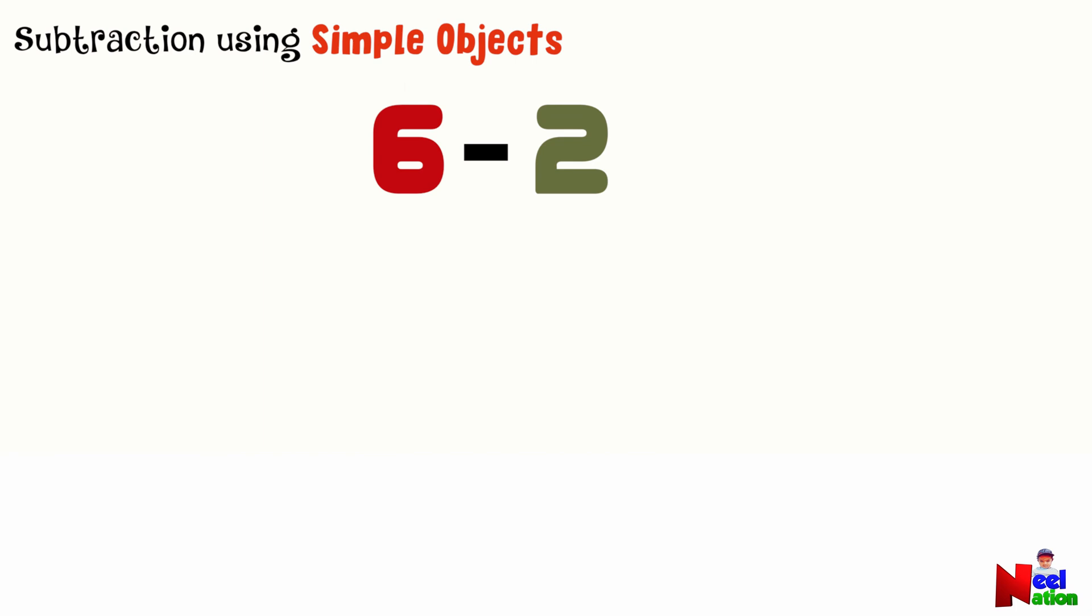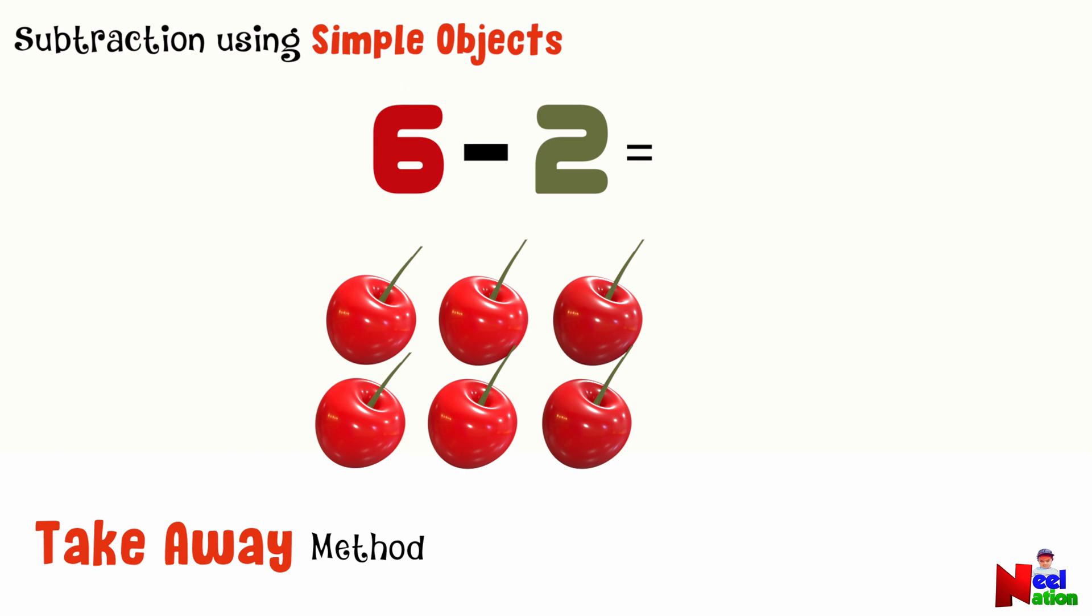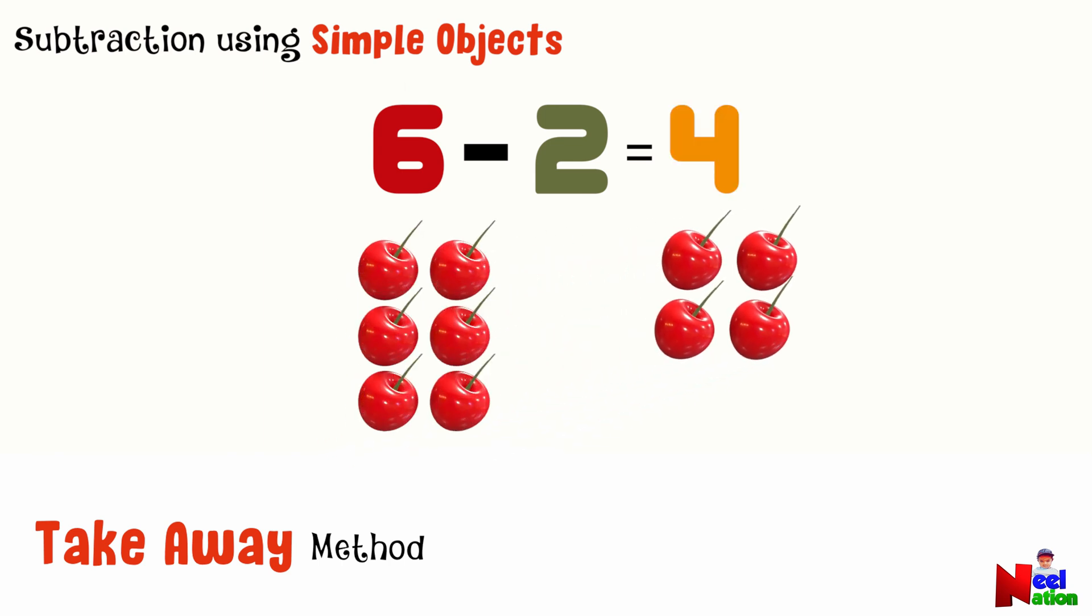Next, can you tell me what is six minus two? Let's practice the take away method. Let's use some delicious cherries this time. How many cherries should we start with? Six. You're correct. Now, let's take two away from them. How many cherries are left now? Four. When we take two away from six, we get four.